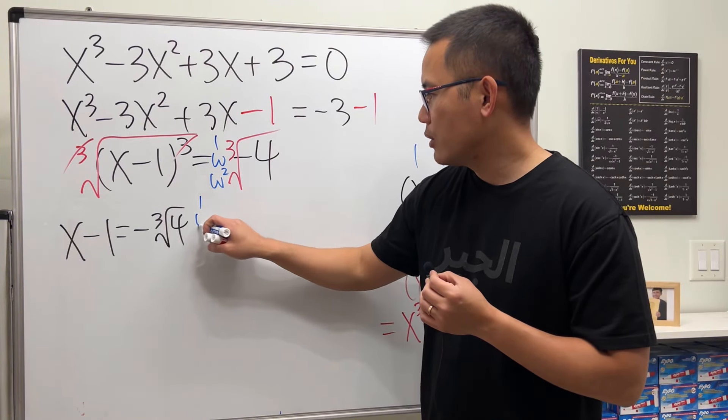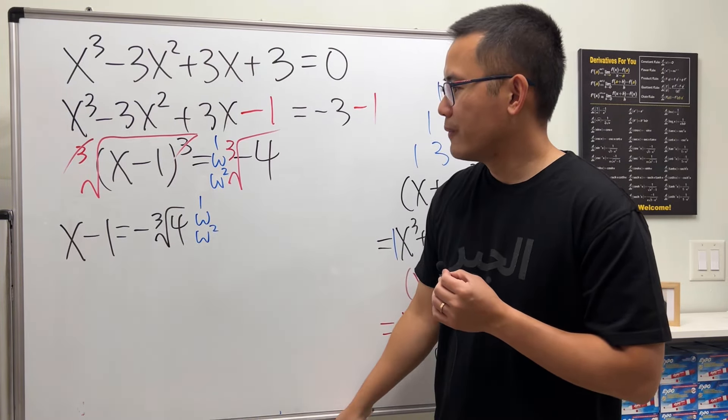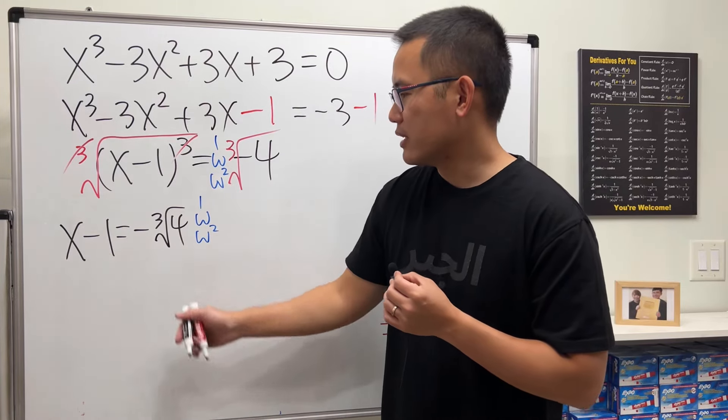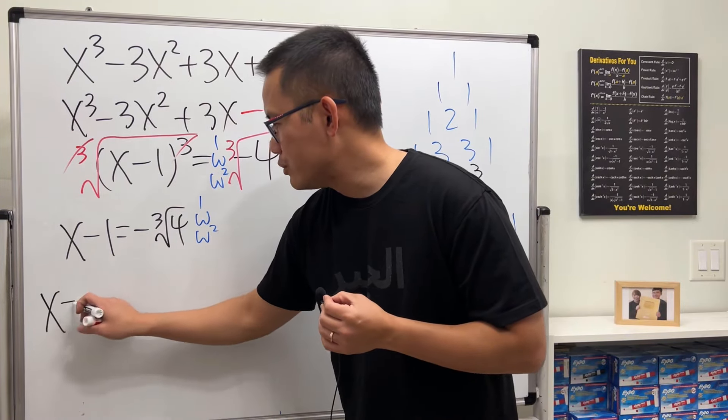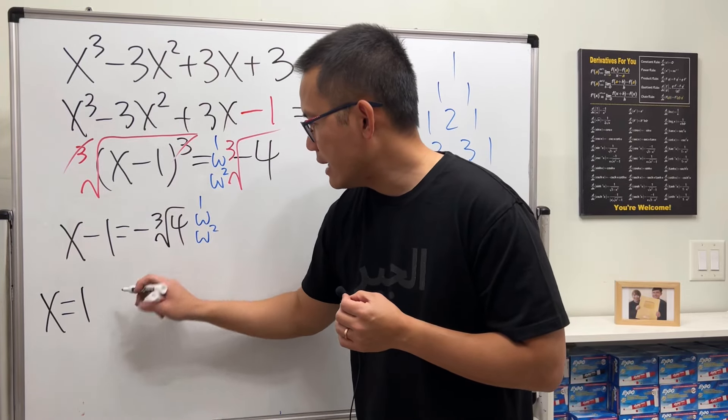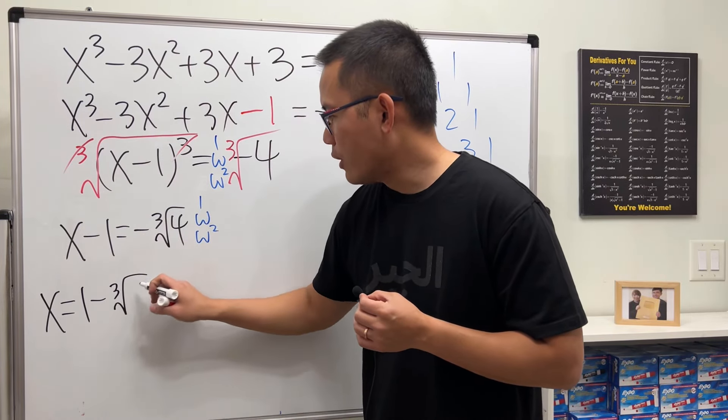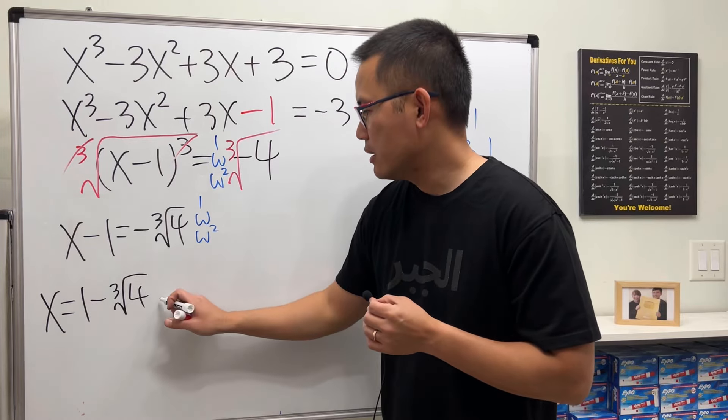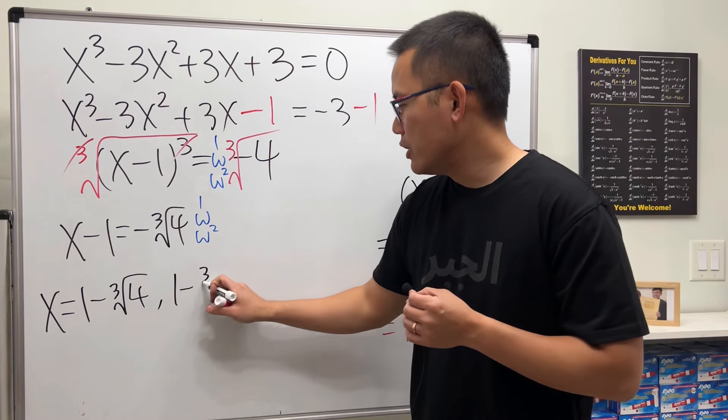Take this multiply by 1, and then I'll just put it on this, like multiply by 1, ω, and ω². I'm going to put 1 to the other side so we have three answers.